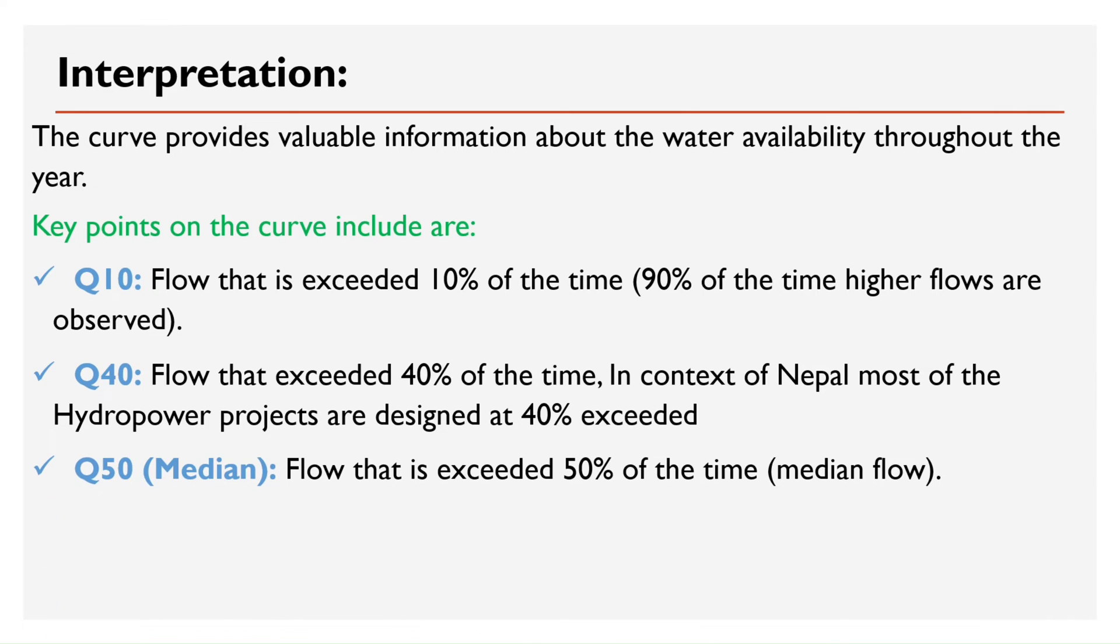Q50, flow that is exceeded 50% of the time. Q90, flow that is exceeded 90% of the time.